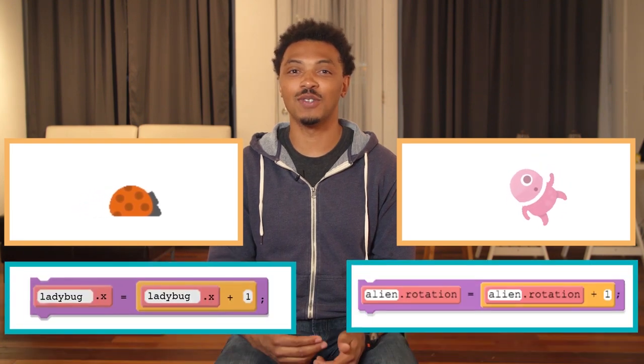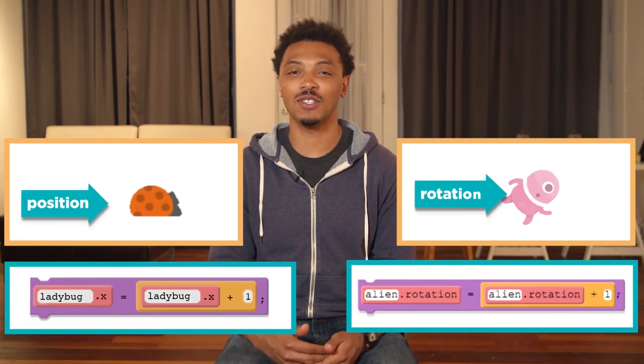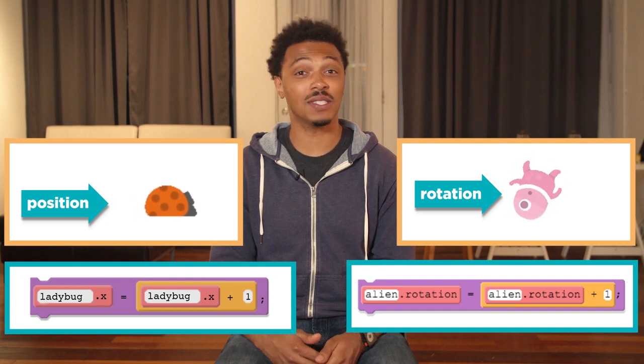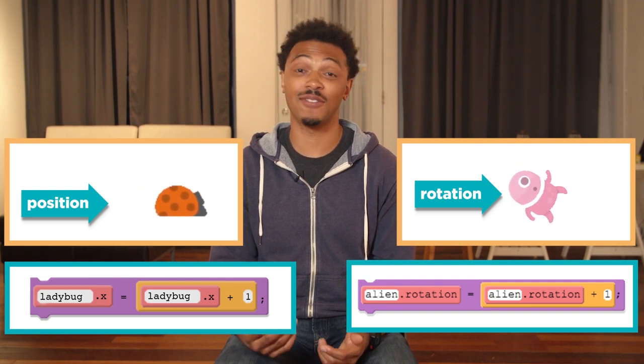Moving your sprites around the screen means using a very familiar pattern, the counter pattern. This pattern lets you add to the position or rotation of your sprite on each tick of the draw loop so it looks like it's moving or rotating at different speeds.